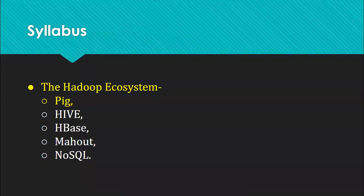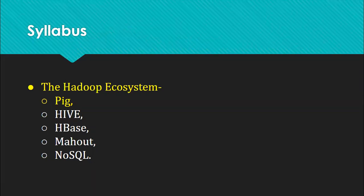In this unit we have to study four parts of the Hadoop ecosystem: Pig, Hive, HBase, and Mahout. After that we have to concentrate more on NoSQL.